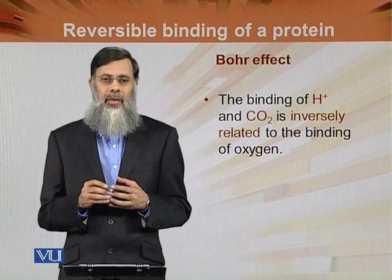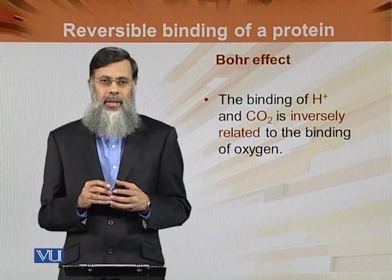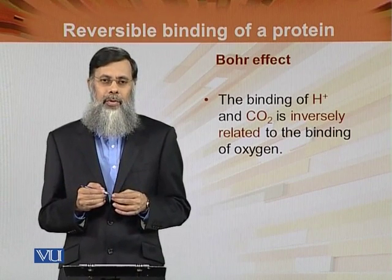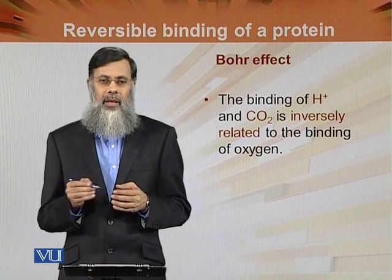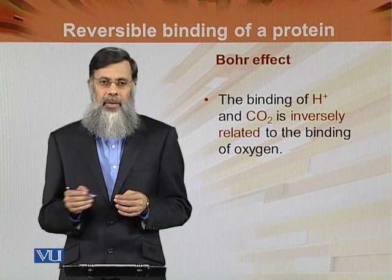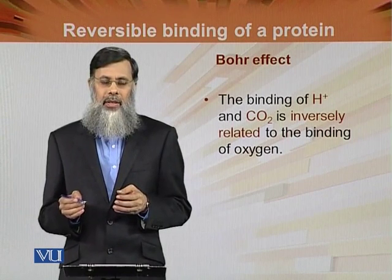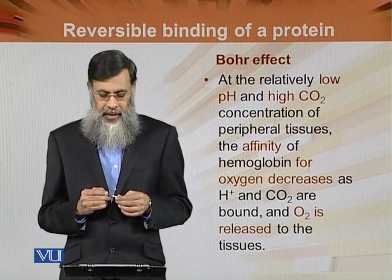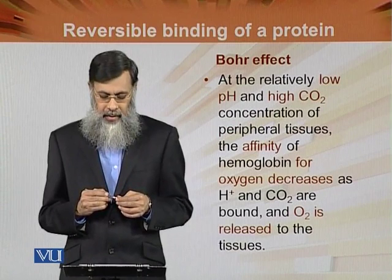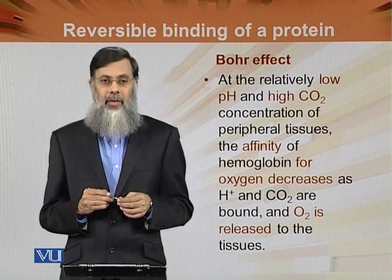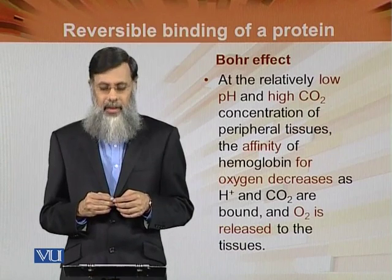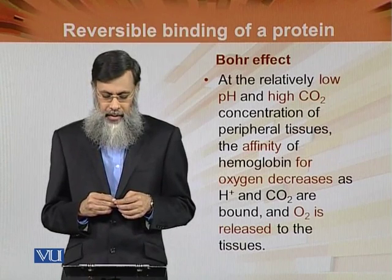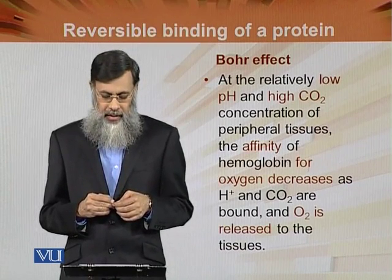The more CO₂ that attaches to hemoglobin, the less oxygen will attach. Similarly, the more hydrogen ions that bind to hemoglobin, the lower its affinity for oxygen. At the relatively low pH and high carbon dioxide concentration of peripheral tissues, the affinity of hemoglobin for oxygen decreases as hydrogen ions and carbon dioxide are bound and oxygen is released to the tissues.